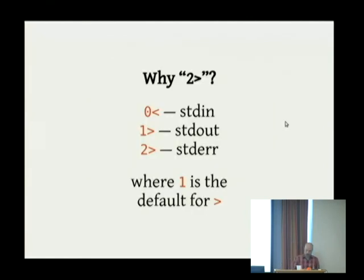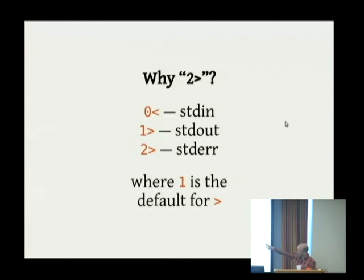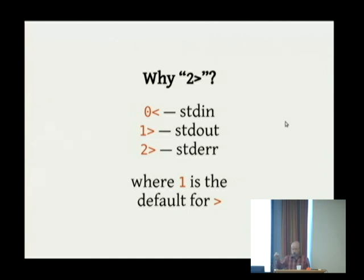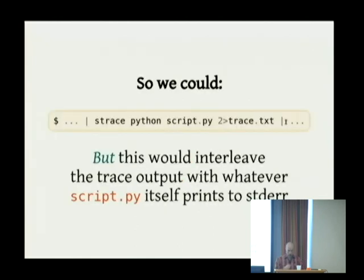So: zero is standard in, one is standard out, two is standard error. You'll often see the greater-than sign without a number, because one — standard out — is the default if you do a shell redirection without telling it the integer number of the file descriptor you want to redirect.